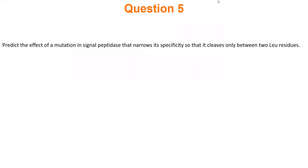Here's one problem: a misfolded protein. When we talked about 3D protein structure, we discussed how a protein folds. Normally for proteins going to the plasma membrane, the signal peptide gets cut off — it's not supposed to be there when the protein folds. However, if it's still there when it shouldn't be, it could interact with the normal folding path. You could have new, non-natural interactions in your protein and end up with a protein that no longer functions — a misfunctioning protein where it doesn't work.